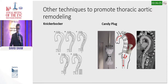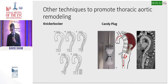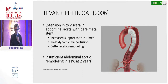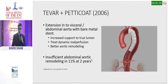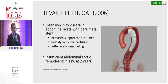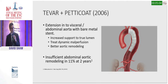People have tried other techniques to promote false lumen thrombosis in the thoracic aorta, including the knickerbocker technique and the candy plug technique. The candy plug is not easily available and knickerbocker hasn't been used extensively. In 2006, Cook introduced a bare metal stent that could be placed and extended into the visceral aorta, which improved support to the true lumen, treated dynamic malperfusion, and promoted better aortic remodeling. A Japanese group recently demonstrated that using the petticoat technique achieves 100 percent thoracic and 89 percent total aortic remodeling, but still 11 percent form an aortic aneurysm at two years.